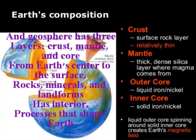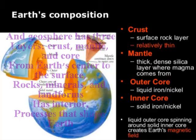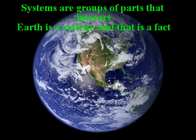The geosphere has three layers from our center to the surface. Rock, minerals, and landforms as interior processes that shape Earth.